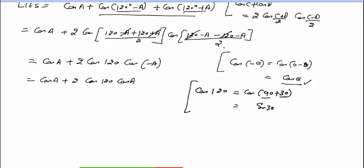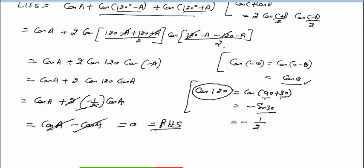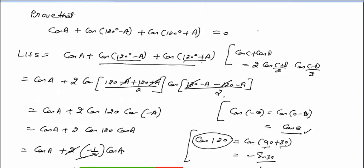Second quadrant में cos negative होता है, और sin 30 degree की value 1/2 होती है। तो cos 120 की value minus 1/2 होगी। So this will become cos A plus 2 times (minus 1/2) times cos A. 2 से 2 cancel — cos A minus cos A, ये cancel होगया, is equal to 0. And this equals the right-hand side, hence proved.